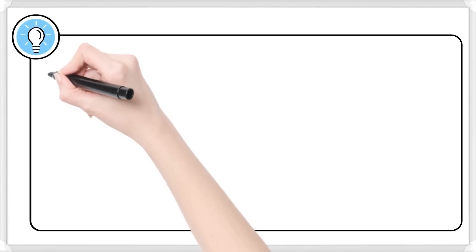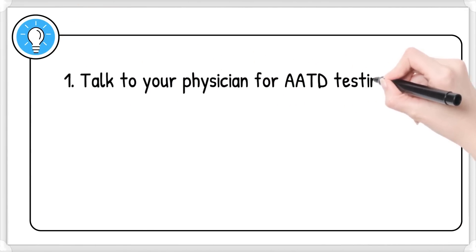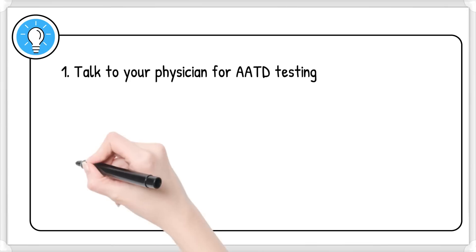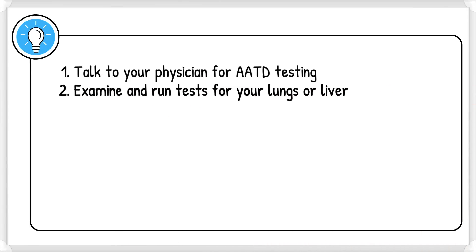Let's walk through these key steps. Talk to your primary care physician about testing for AATD. If AATD is confirmed, see a specialist to examine your lungs and liver, and run tests to make sure your lungs and liver function well.